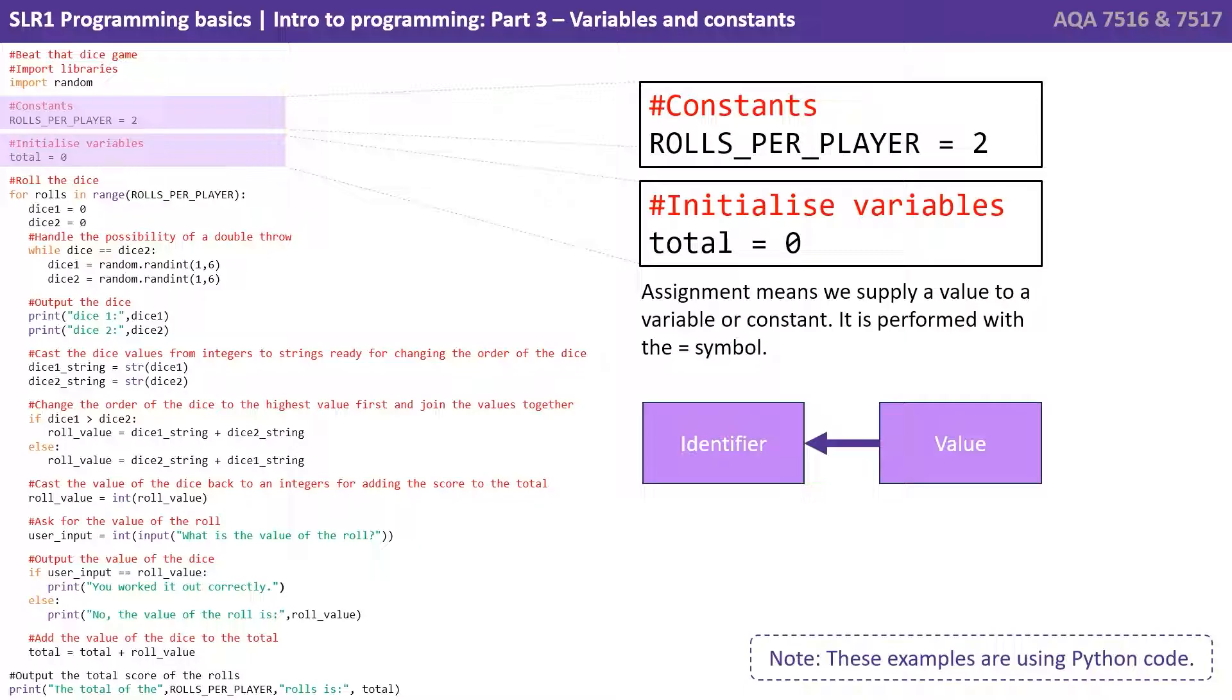In both these examples we're seeing what's called assignment. Assignment means we supply a value to a variable or constant, and it's performed with the equal symbol. You'll notice the value we want to assign is on the right and the identifier or label is on the left. We assign from right to left.